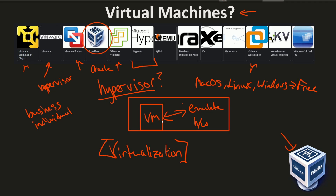If you have a pro edition of Windows, you can get access to something called Hyper-V from Microsoft — and guess what Hyper-V stands for? Hypervisor. It's just another virtual machine application that you can run your virtual machines in. There's also Parallels for Mac, which is probably the most famous for Mac just because it has good compatibility. There are other ones you can research to figure out which hypervisor or virtualization app you might benefit from the most.